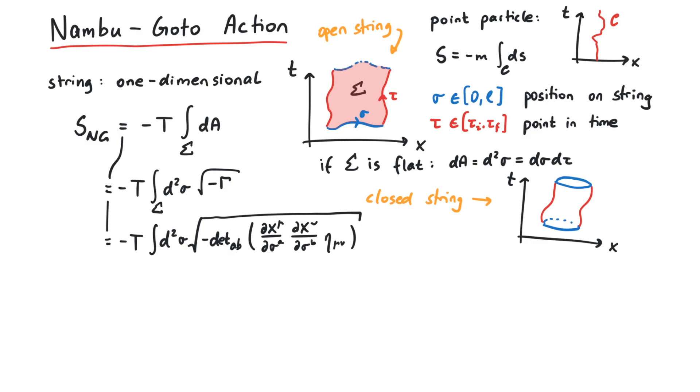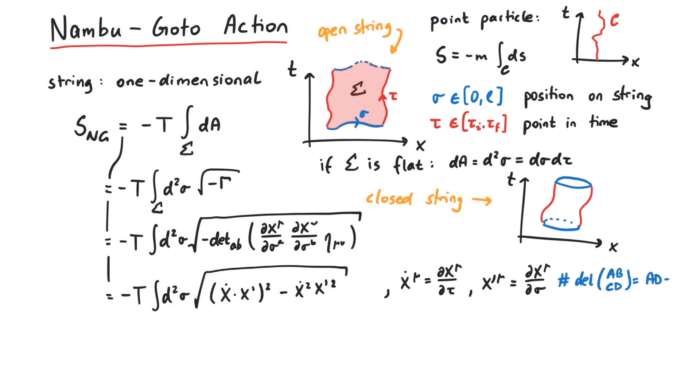If we plug in the expression for gamma, we can write the action in a slightly nicer way, where a dot represents a derivative with respect to tau, and a prime denotes a derivative with respect to sigma. This is the Nambu-Goto action for a string.